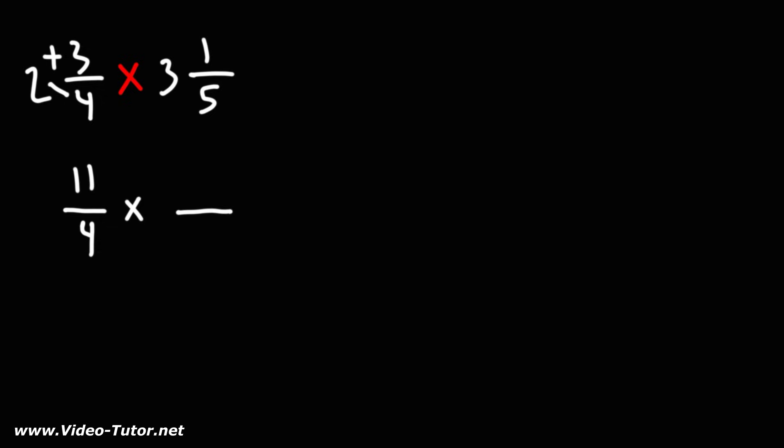Let's do the same thing for the second mixed number. We're going to rewrite the denominator, multiply these two numbers, 3 times 5 is 15, add the numerator, that's 16.